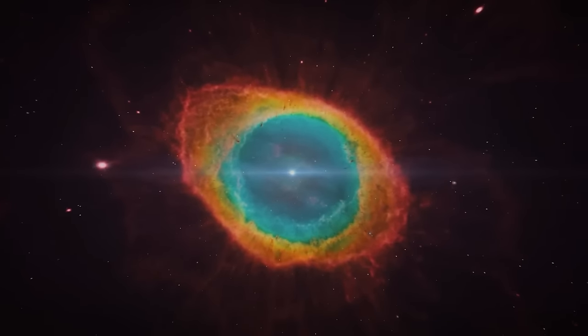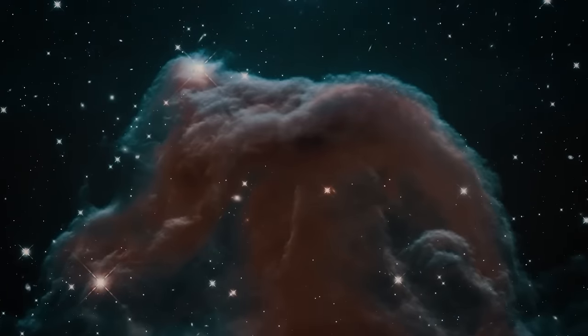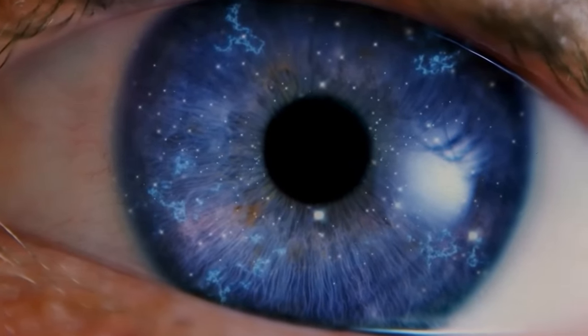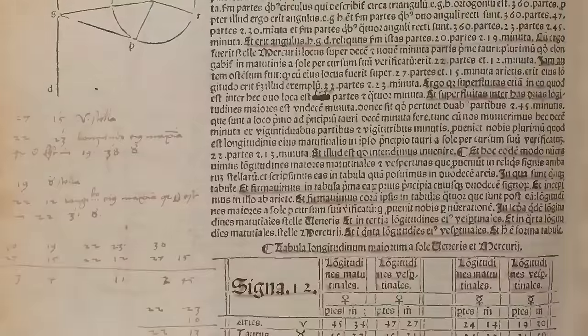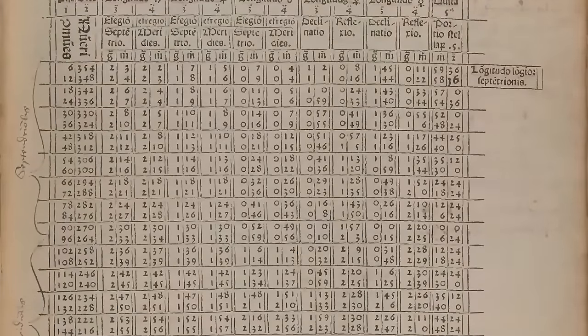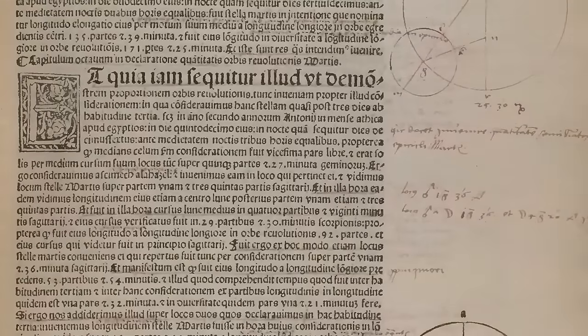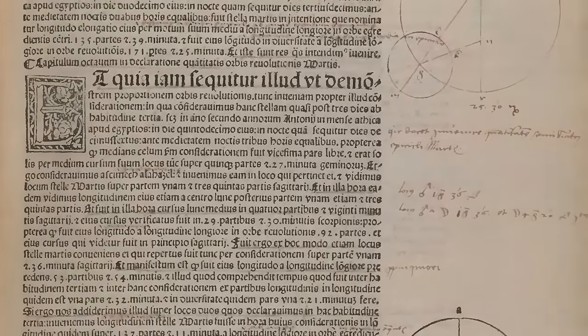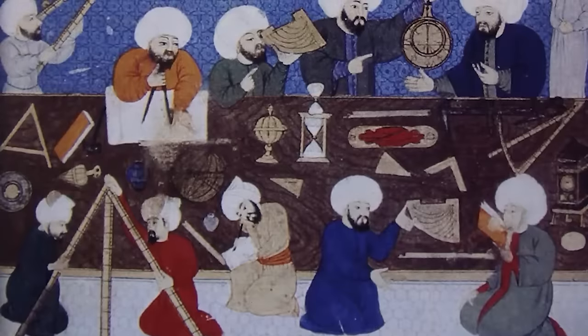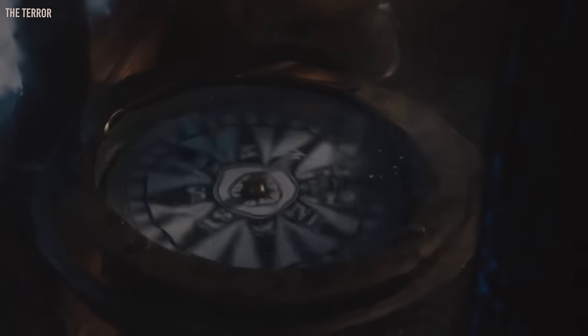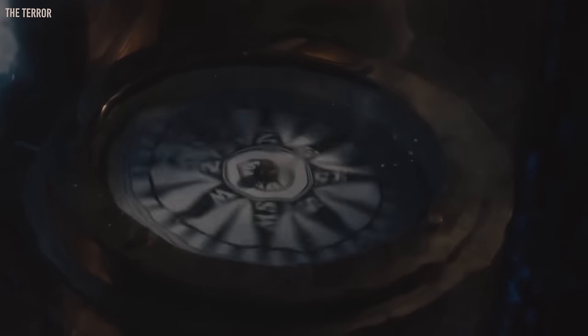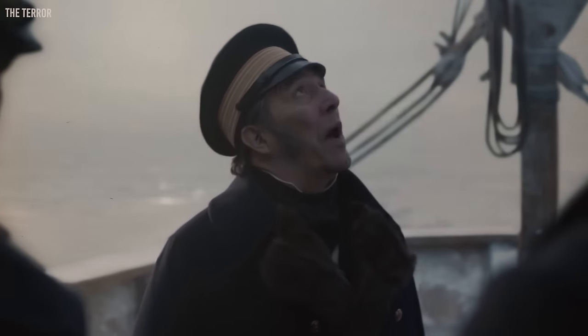Astronomy's importance extends beyond curiosity with implications including navigation and timekeeping. Since times past, humans have relied on observations of space for navigation. Early mariners used stars to chart courses, while sundials and astronomical clocks provided timekeeping.